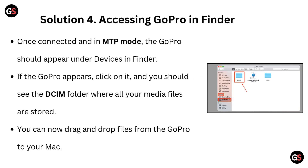Solution 4: Accessing GoPro in Finder. Once connected and in MTP mode, the GoPro should appear under Devices in Finder. If the GoPro appears, click on it and you should see the DCIM folder where all your media files are stored. You can now drag and drop files from the GoPro to your Mac.